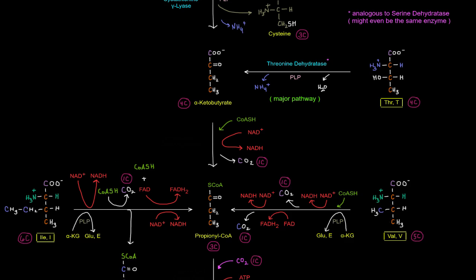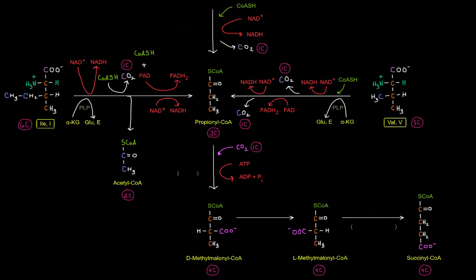Okay. Now we can get that propanyl CoA from isoleucine. And we've actually seen this before, except I'm switching up the coloration of these carbons. These two carbons, as we said before, end up in acetyl CoA after adding this coenzyme A.